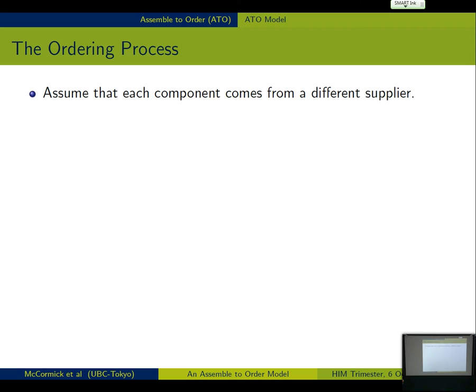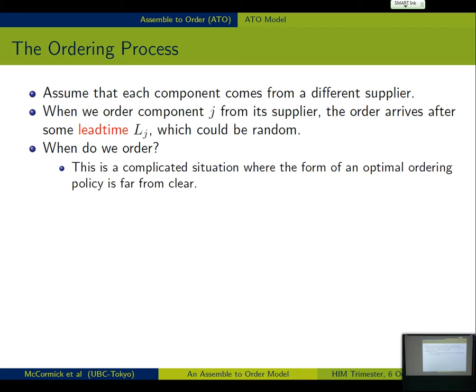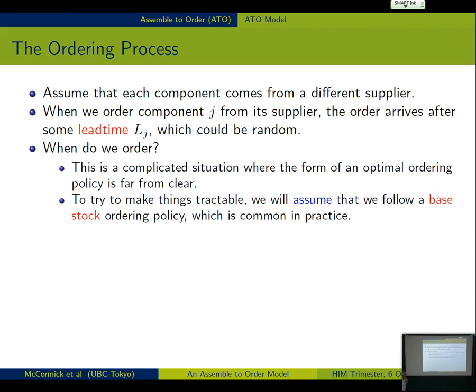In terms of how we satisfy demands, the demand for backlog product takes precedence over new demand that arrives later on. So we're fulfilling demand in a first-come, first-served kind of thing. We're assuming everything comes from different supplier. There's some lead time, which could be random. When do we make our orders? This is a pretty complicated model, so in a lot of inventory models, they like to figure out what the form of an optimal policy is. But this is too complicated to do that. So instead, we're just going to make a simplifying assumption that we follow a so-called base stock order policy.